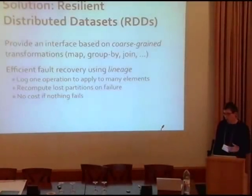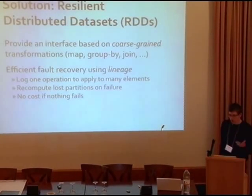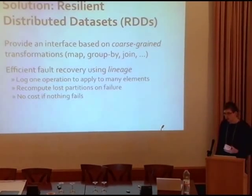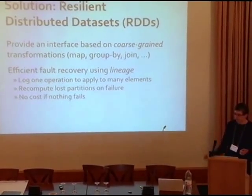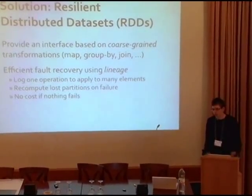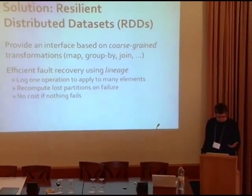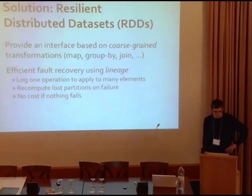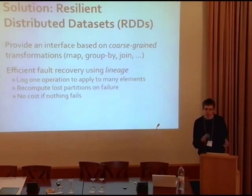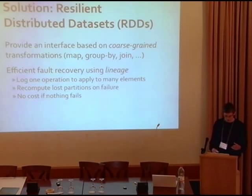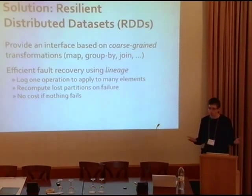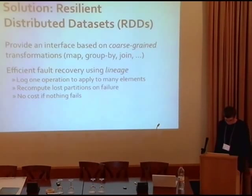The programming model we came up with is called Resilient Distributed Datasets, or RDDs, and it's based on coarse-grained operations. Instead of accessing each cell of memory individually, you do an operation on a whole data set at once — something like a map, group-by, filter, or join. This allows us to do fault-tolerance by recovering through recomputation, which we call lineage. We track the sequence of operations used to build each data set, and if we lose a slice, we only need to reapply that operation on a subset of the data. If nothing fails, there's essentially no cost — we're just logging one operation to apply to many items.